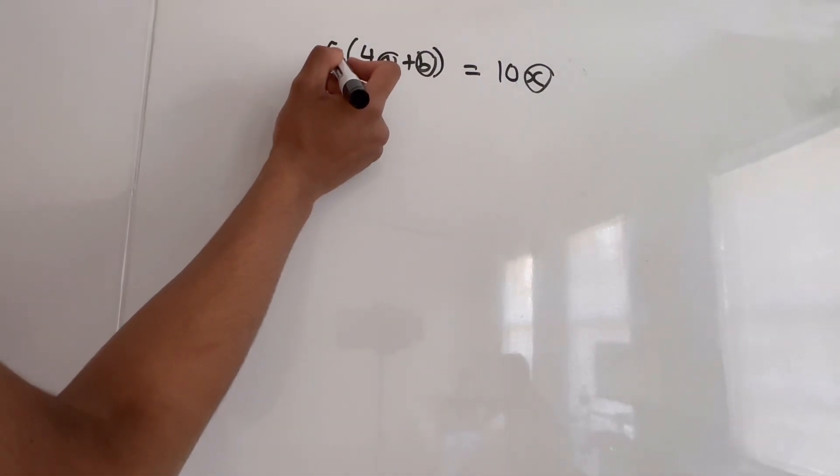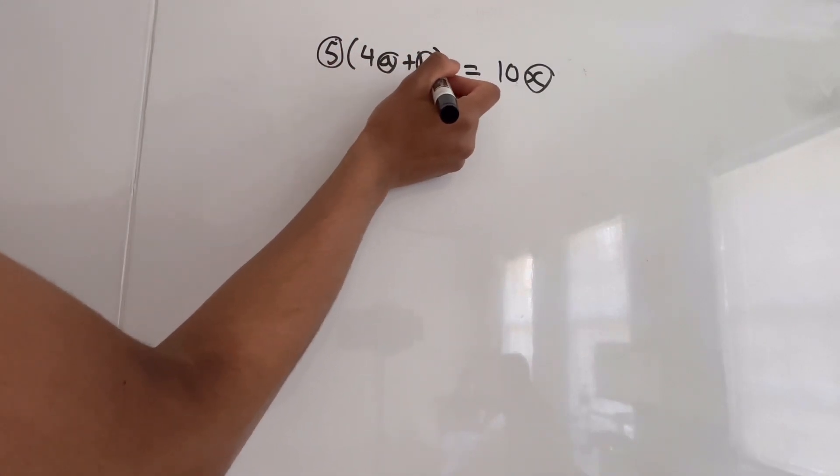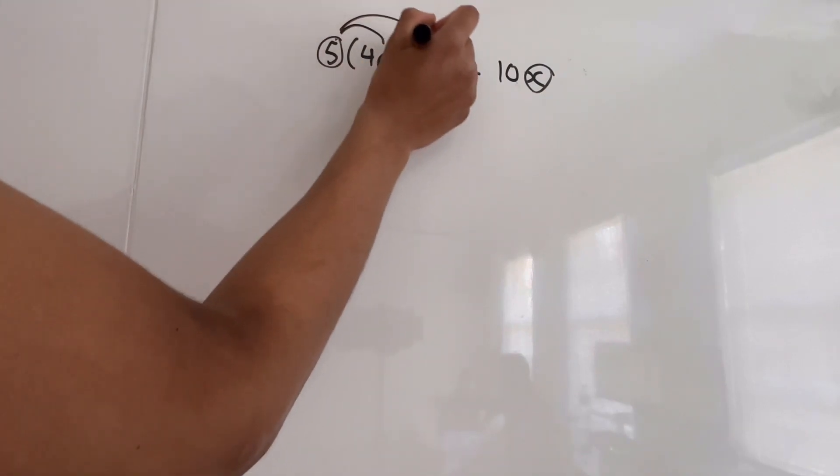So our first step is to distribute this 5 here. So remember, when we're distributing, we're going to have to distribute our outside term, which in this case is 5, to all our terms in our parentheses, so 4A and B. So we're going to multiply 5 with 4A and B.